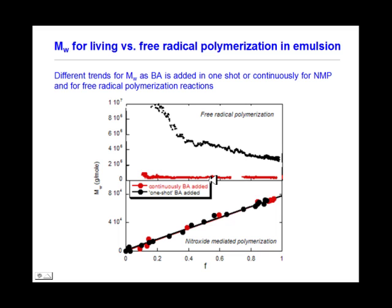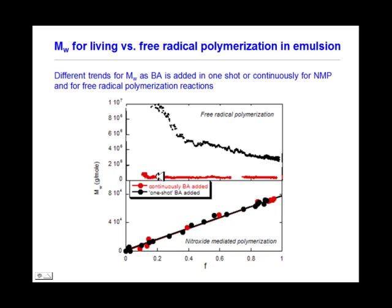For a contrasting view, molecular weight for living and free radical polymerization in emulsion is shown here. Butylacrylate is added in shot or continuous feed for nitroxide-mediated polymerization and for free radical polymerization. For NMP reactions, molecular weight increases linearly with conversion — typical living behavior. For free radical polymerization, we have high molecular weight going down with conversion as termination occurs, then very low molecular weight as monomer is introduced semi-batchwise, as expected.